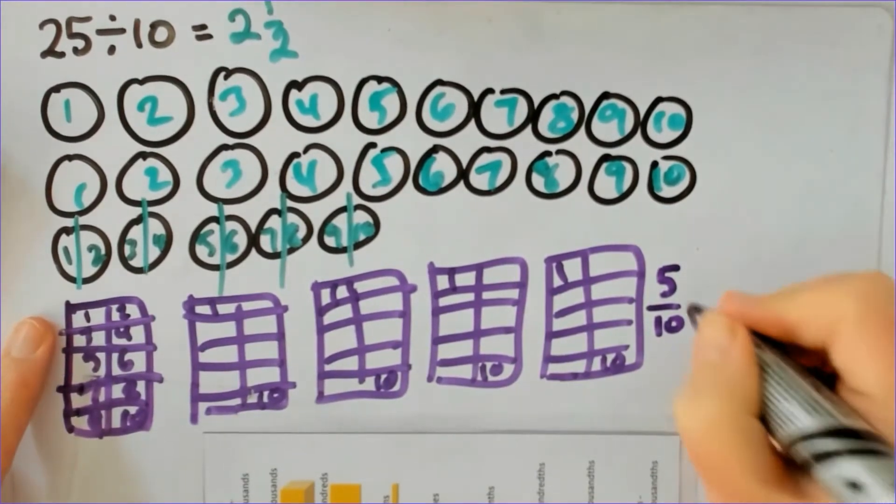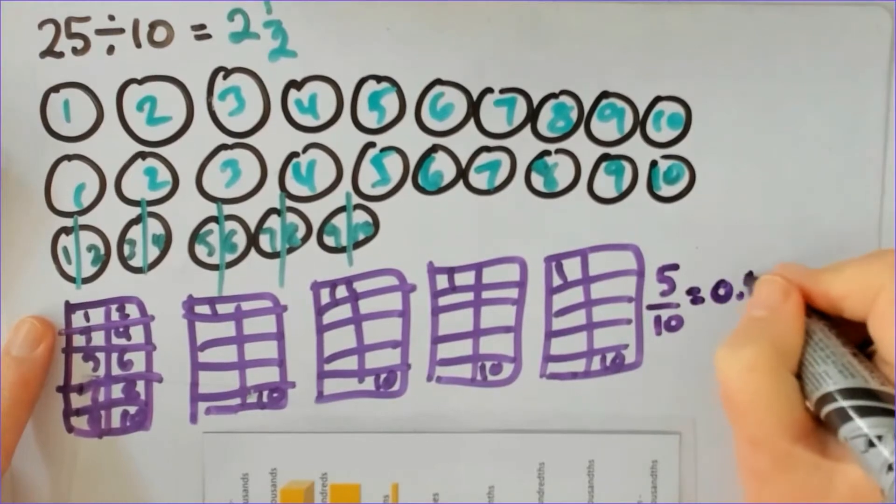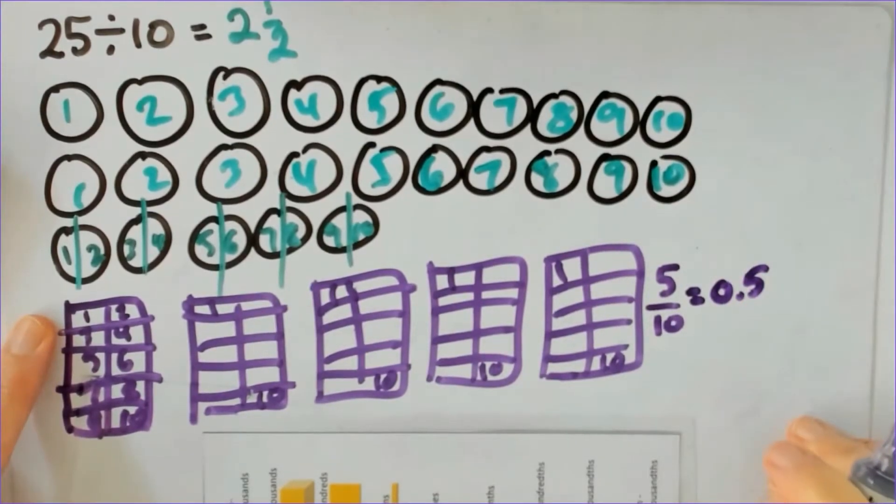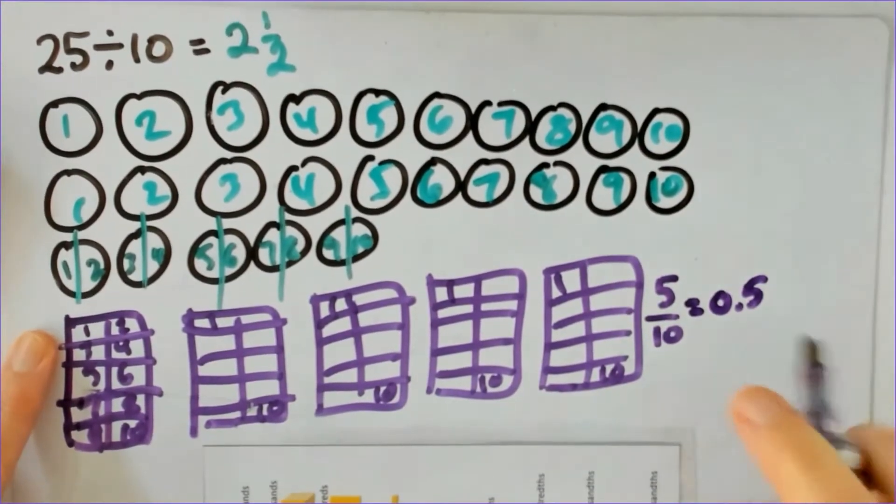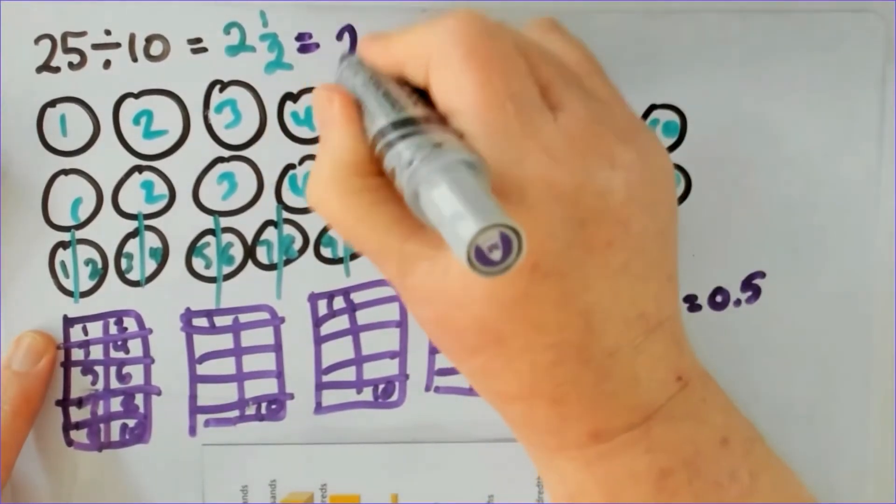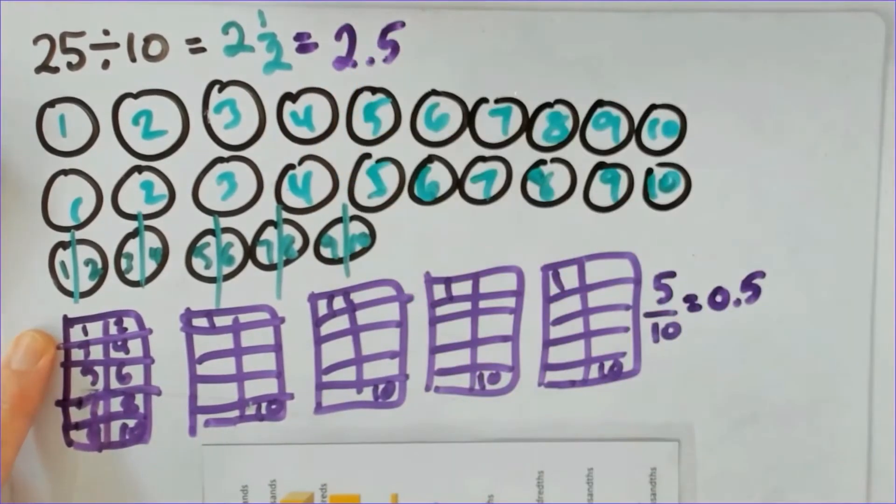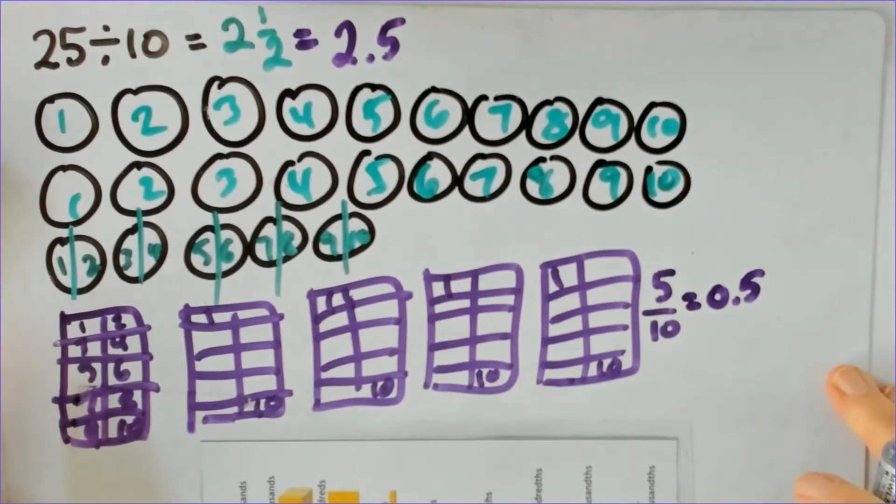So one tenth, five pieces of size one tenth and I write that like that. So each person gets two and five tenths of a pizza, two and a half pieces of pizza.